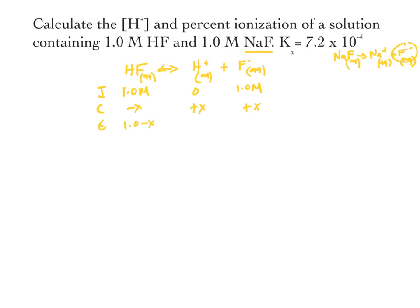Now that we have our equilibrium values from the ICE table, we know that the equilibrium expression, or Ka, is equal to [H⁺][F⁻] / [HF]. We plug our equilibrium concentration values in: Ka equals x times (1.0 + x) all over (1.0 − x), which equals 7.2 × 10⁻⁴.